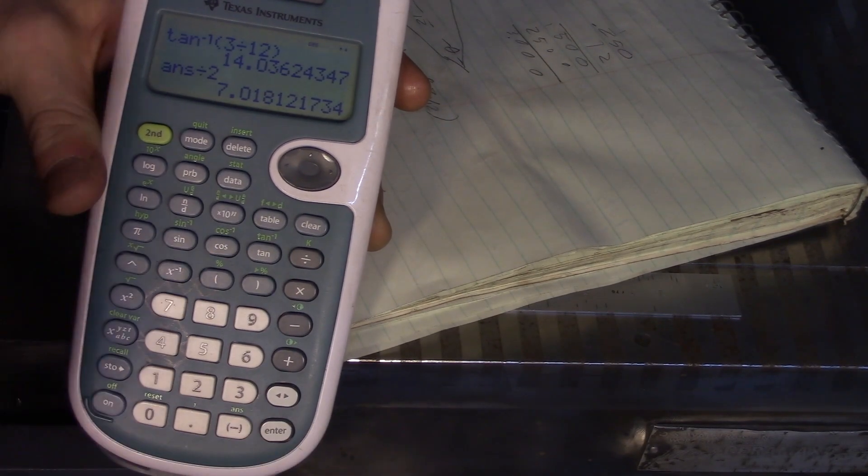All right. So if you want to cut a three inches per foot taper on the lathe, you want to set the compound to 7.018 degrees.